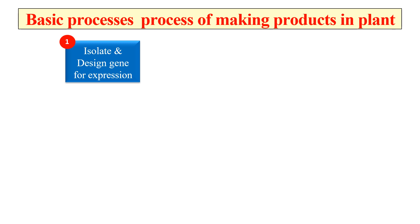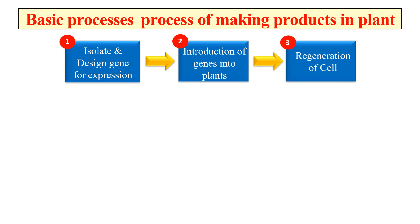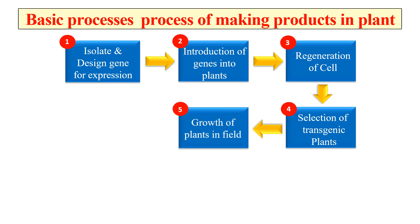After designing the gene for expression, the next step is introduction of the gene construct into the plant. It can be introduced by either physical methods like DNA microinjection or gene gun, or biological methods like Agrobacterium-mediated gene transfer. Once genes have been transferred, the cells are allowed to regenerate, and after regeneration we select the transgenic plants, since we want to make our product only from transgenic plants.